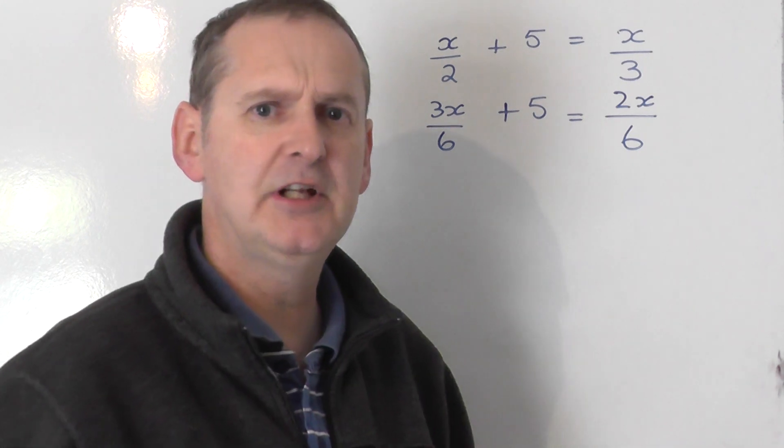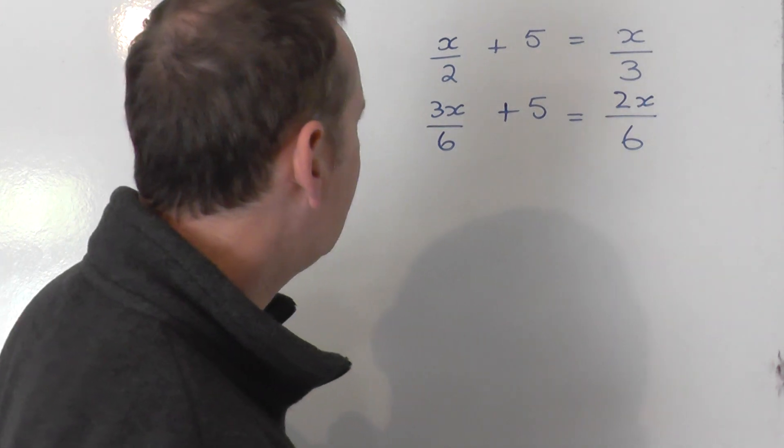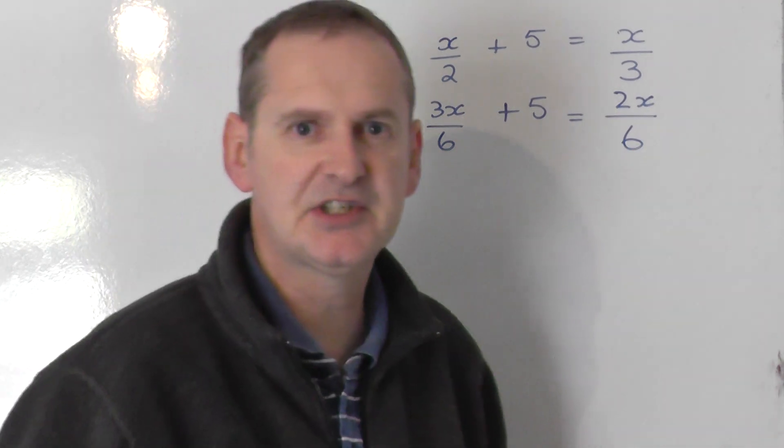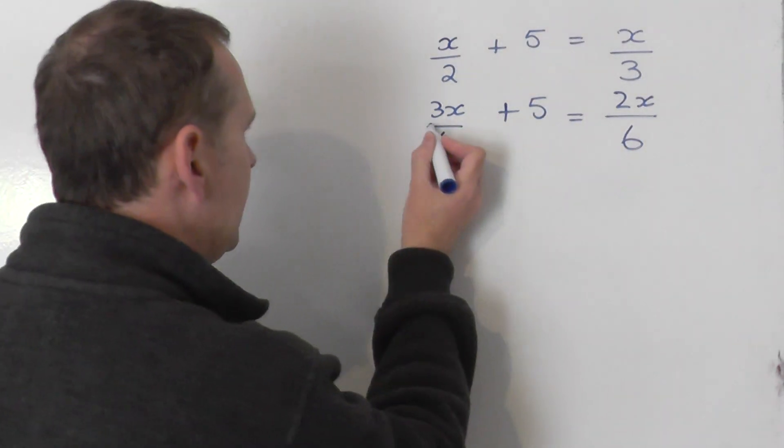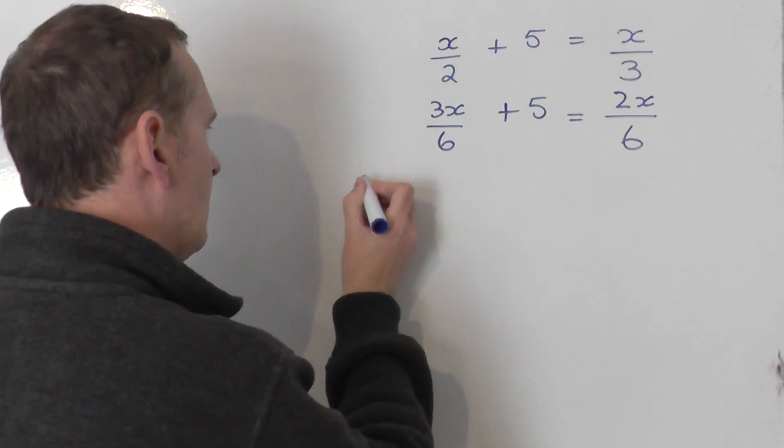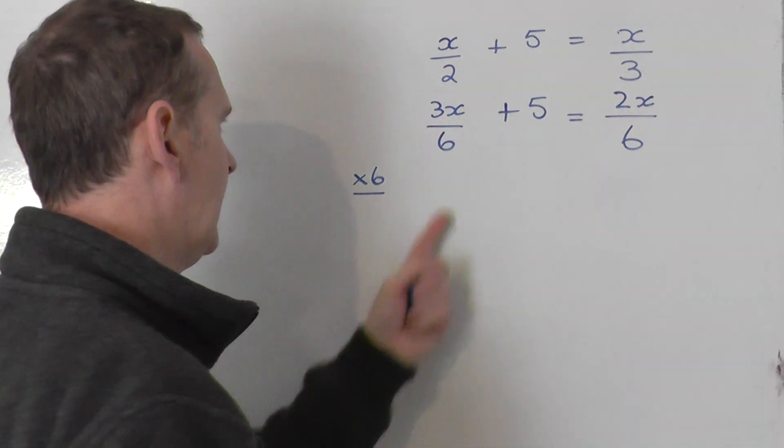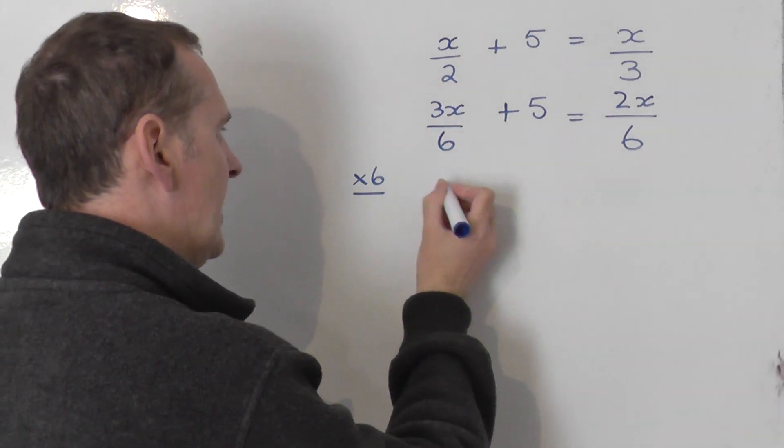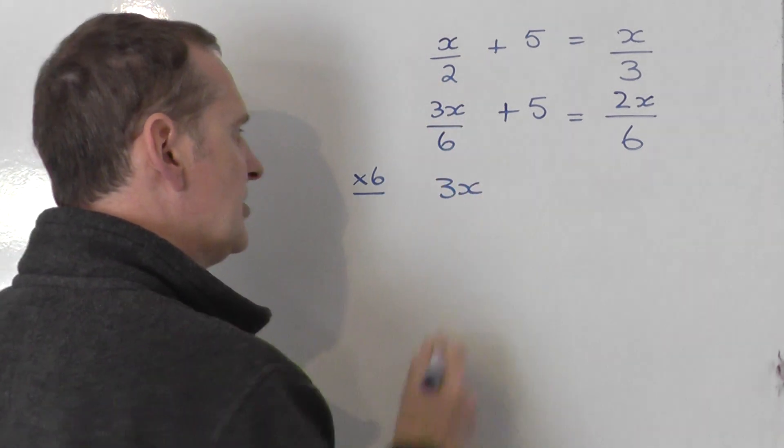How do I now deal with this? What I'm going to do now is simply multiply and get rid of this 6. So this is share by 6. What I'm going to do is multiply this by 6. 3x share by 6. If I times it by 6, I just get 3x.